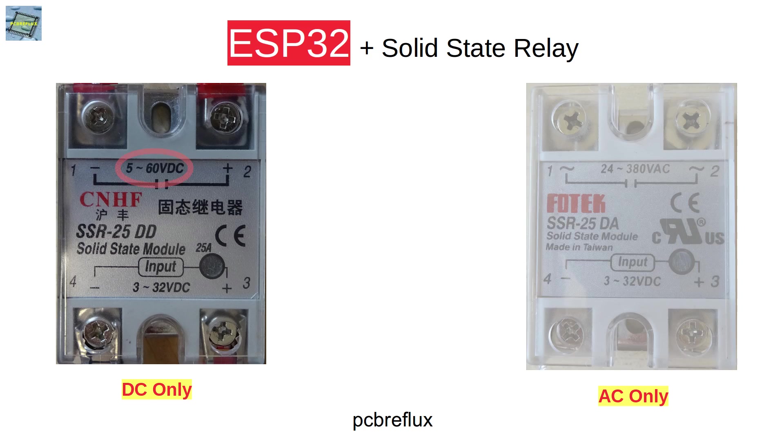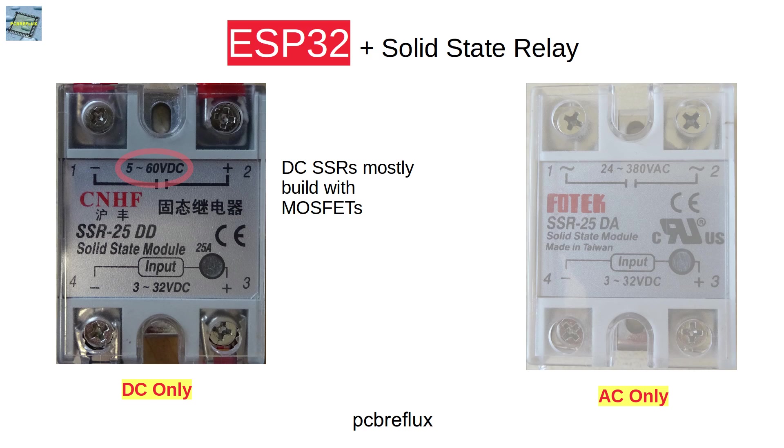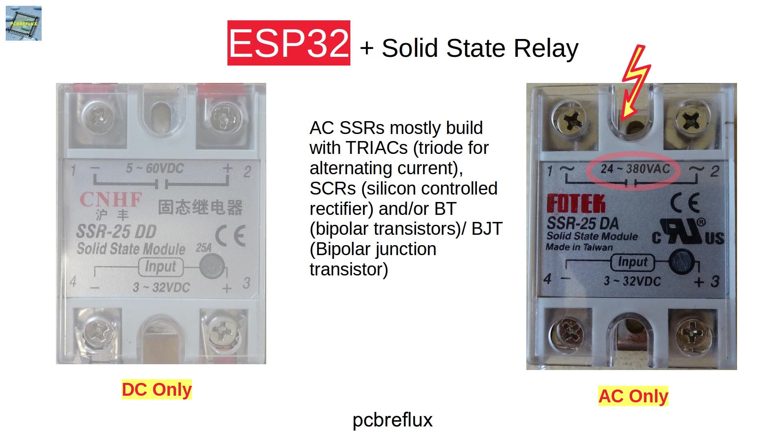You cannot use the DC-SSR for alternating current and also you don't use the AC-SSR for direct current because they are based on different technologies. The DC solid state relays are based mostly on MOSFETs, switching MOSFETs, and the AC solid state relays are based on triacs or silicon controlled rectifiers or on bipolar transistors, also called bipolar junction transistors, BJTs.